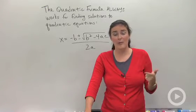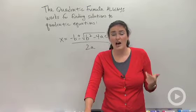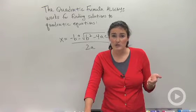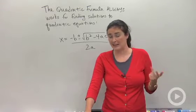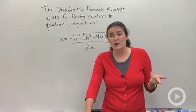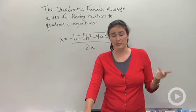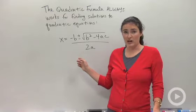You could try factoring, but factoring doesn't always work. You could try square rooting both sides if there's no b term, but that's not always the case. There's two ways that always work. Those ways are completing the square and the quadratic equation.